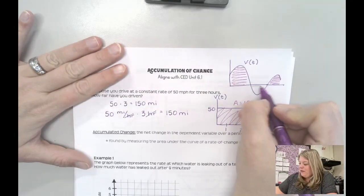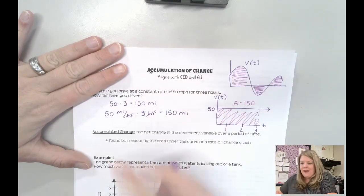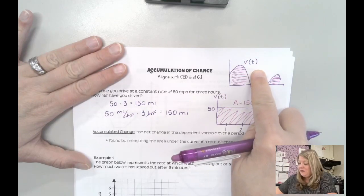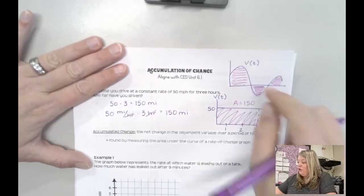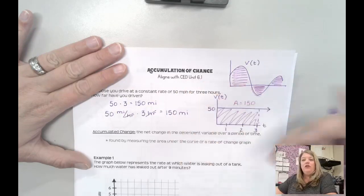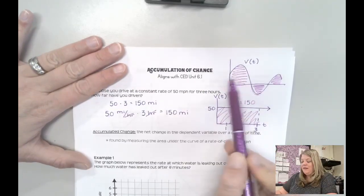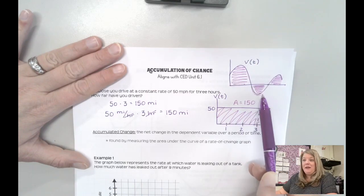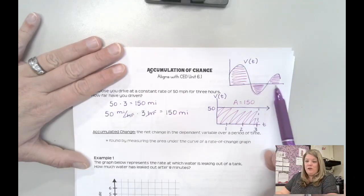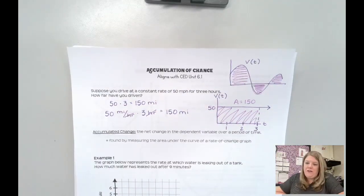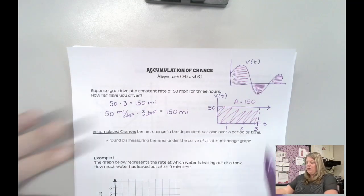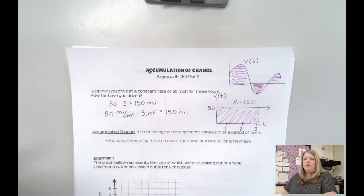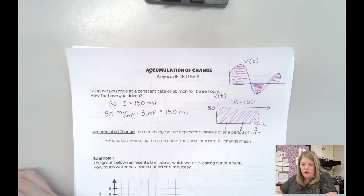Down here, my rate of change is negative — this is all a negative rate of change, which in terms of velocity would mean that I'm going backwards. So if I was trying to find how much total distance I've covered, I would find this area and then subtract this area because I'm going backwards by that amount, and then I'd be going forwards again. That's getting a little ahead of ourselves, but that's what we're going to be looking at — these areas underneath a graph represent the accumulation of a rate of change function.